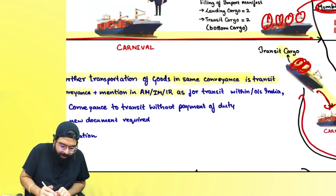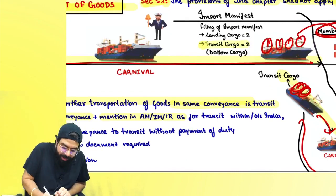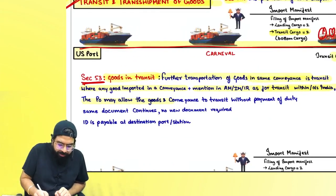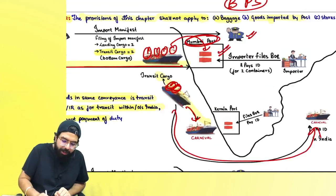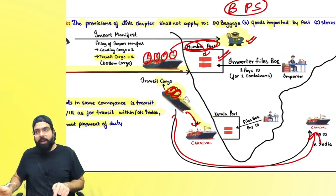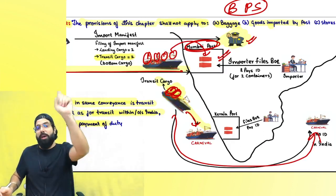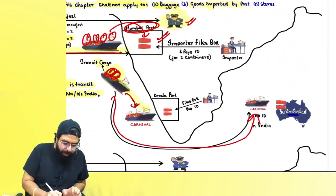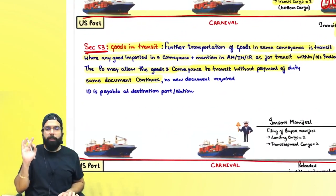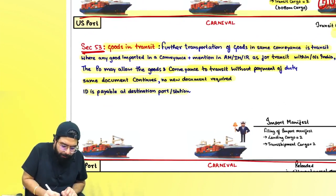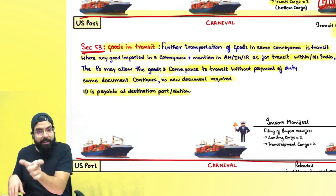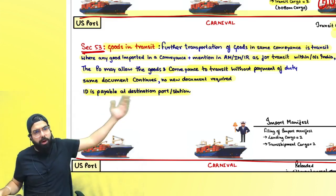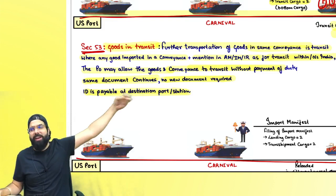Where goods in the conveyance are mentioned in the arrival manifest, import manifest, or import report as transit cargo within or outside India, the proper officer may allow the goods and conveyance to transit without payment of duty. The same document can continue — no new import manifest is needed. Import duty on goods in transit is payable at the destination port. If the destination is outside India, that government decides whether to charge duty; if within India, duty is payable at the destination port.